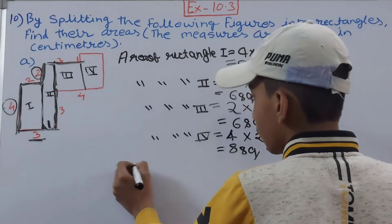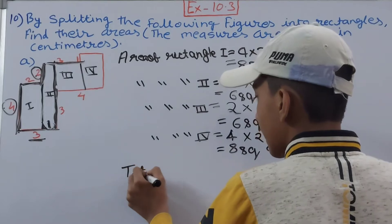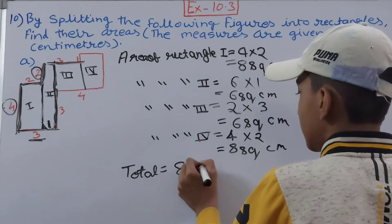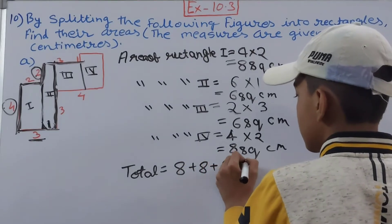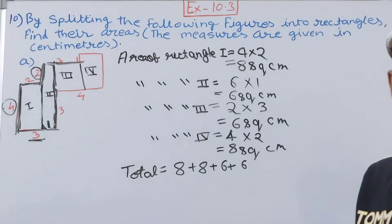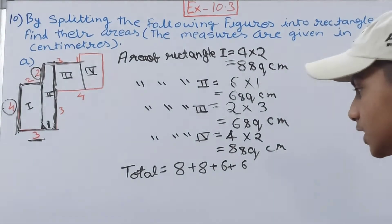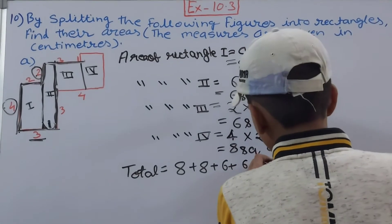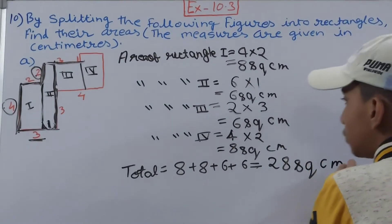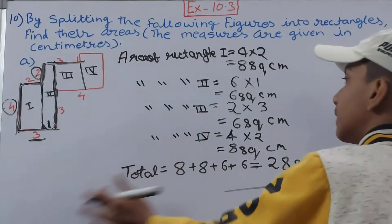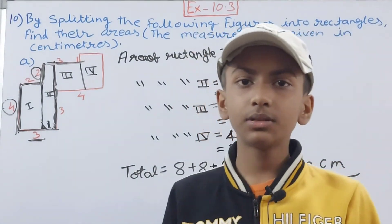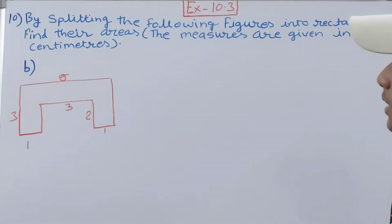For the total area, we add all four rectangles: 8 + 6 + 6 + 8 = 28 square centimeters. So the total area of this whole figure is 28 square centimeters. Now let us move on to the next figure.